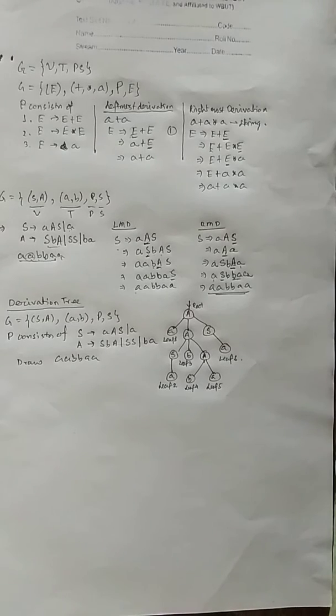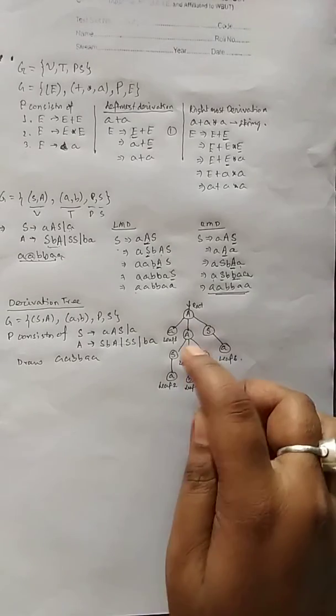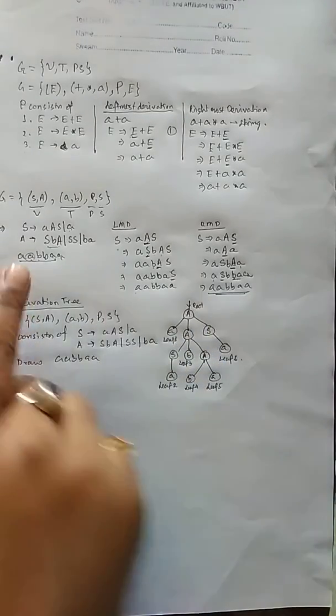Okay, now what is the derivation tree? If you want the definition, a derivation tree is a graphical representation or description of how a sentence or string has been derived or generated using a grammar. So this is a derivation tree. Now this tree has been generated with this grammar.